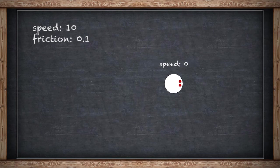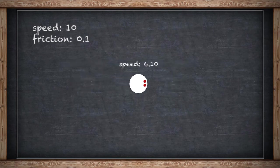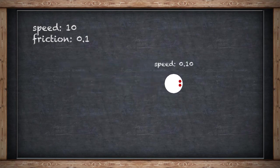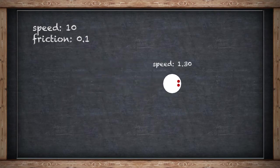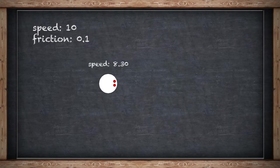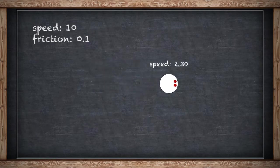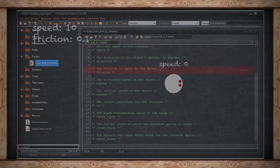Friction is read and write, which means you can read the value of this variable and use it as you wish, or set it by writing to it in the code — something like friction equals 0.1 — and then it will apply every step.